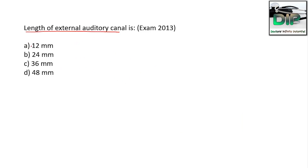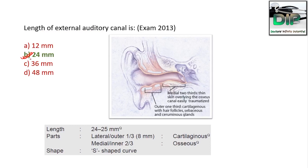Next question: The length of the external auditory canal is — Option A, 12 mm; Option B, 24 mm; Option C, 36 mm; Option D, 48 mm. The correct answer is 24 mm. The medial two-thirds of the external auditory canal is bony, and the outer one-third is cartilaginous. The thin skin overlying the osseous canal is easily traumatized. The outer one-third cartilaginous portion has hair follicles and sebaceous and ceruminous glands. The shape of the external auditory canal is S-shaped.